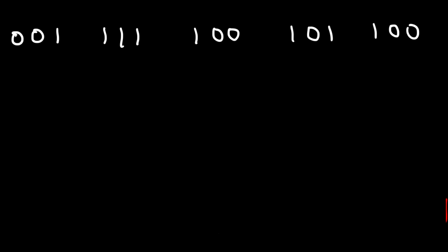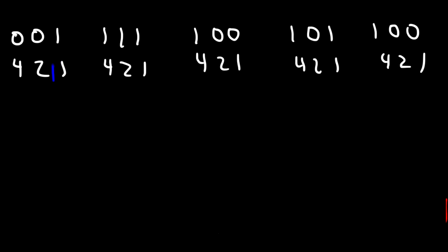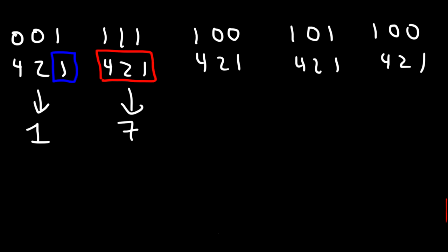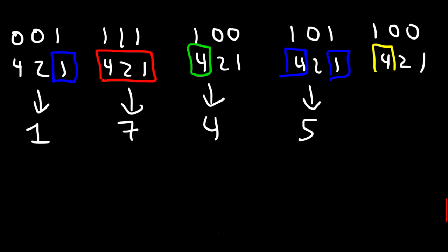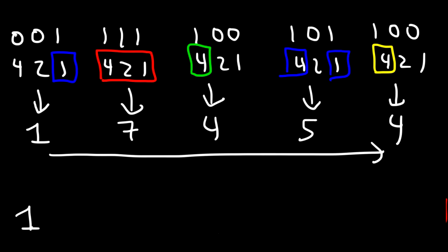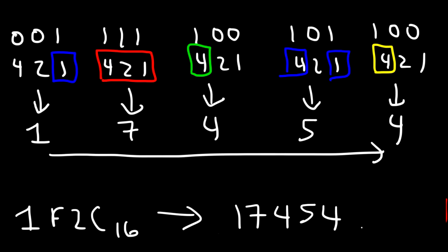So let's convert these binary numbers in groups of three to their decimal equivalents. We only have a 1 in the first column, so this equals 1. For the next one, all are associated with 1, so it's 4 plus 2 plus 1, which corresponds to 7. Here we only have a 4, so that's just 4. For the one in the middle it's 4 plus 1, which is 5. And for the last one we only have a 4, so that corresponds to 4. Reading left to right, 1F2C in hexadecimal is 17454 in the octal system.